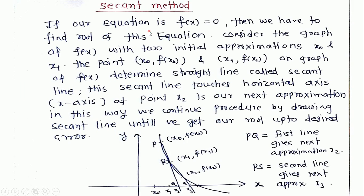If we are interested in finding the roots of this equation f of x, consider the graph of the function. This is the graph of the function y is equal to f of x. If our initial guess is x0, then the value at this point is f of x0, and this point is x0 comma f of x0.